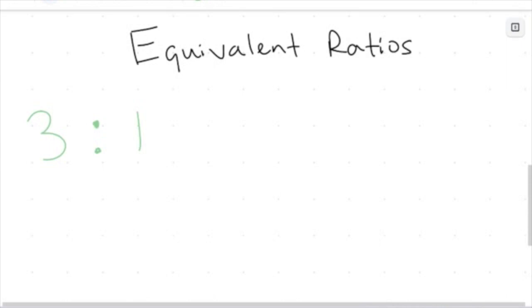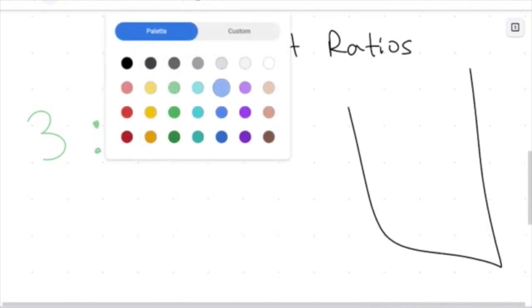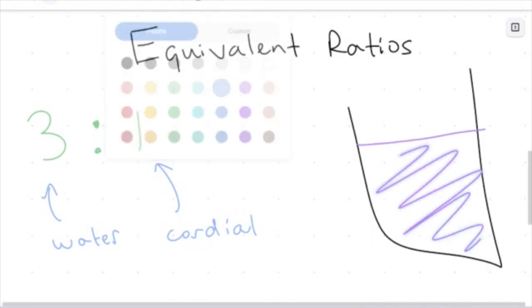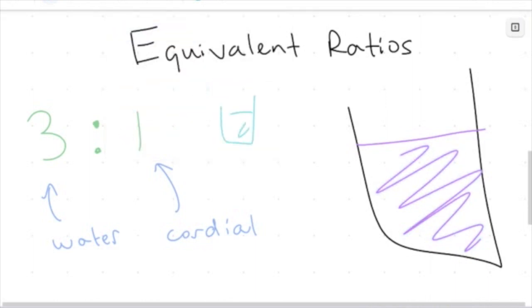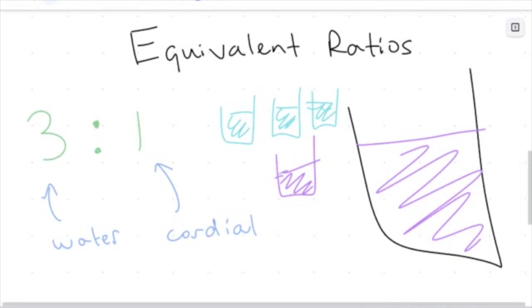In the previous video, we looked at this idea of cordial. To make a full big jug of cordial, I needed three glasses of water for each one glass of cordial. So to make one jug, I would have three glasses of water and one glass of cordial.